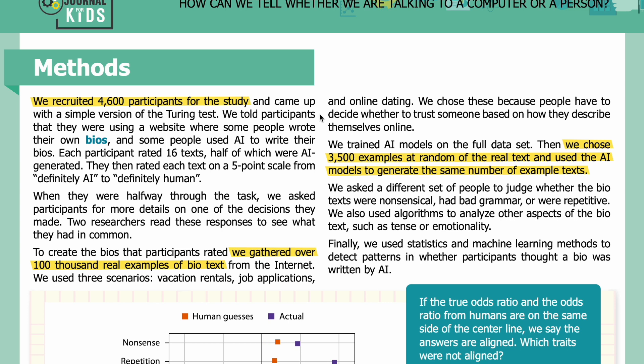Methods: We recruited 4,600 participants for the study and came up with a simple version of the Turing test. We told participants that they were using a website where some people wrote their own bios and some people used AI to write their bios. Each participant rated 16 texts, half of which were AI-generated. They then rated each text on a five-point scale from 'definitely AI' to 'definitely human.'